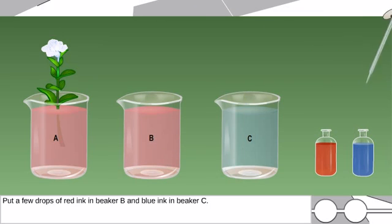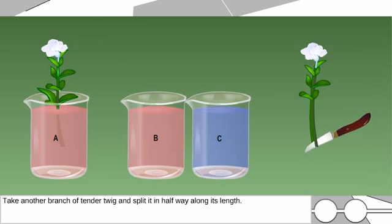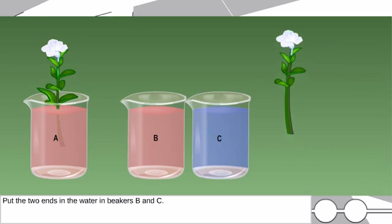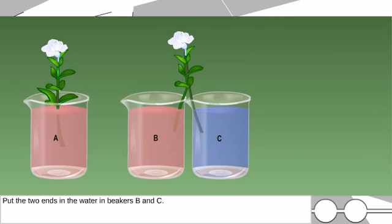Take another branch of tender twig and split it in half way along its length. Put the two ends in the water in beakers B and C. Observe them after 8 to 10 hours.